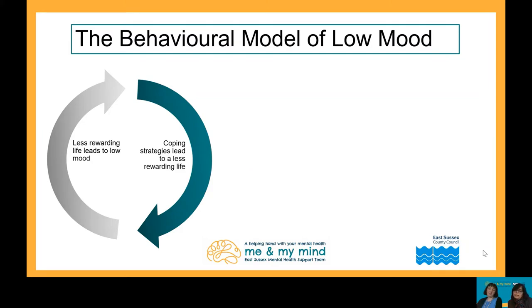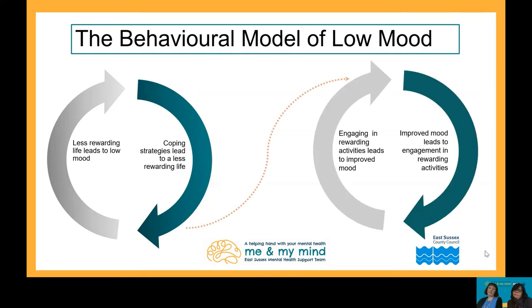However, both can prevent your child from engaging in a busy, active, rewarding life, and they can become stuck in a cycle. For example, if your child falls out with a friend they usually attend a club with, they may be less likely to want to go to the club, spend more time at home alone feeling isolated, which then makes it more difficult for them to rejoin their club — leading to a cycle of continuing to stay at home and continuing to be isolated.